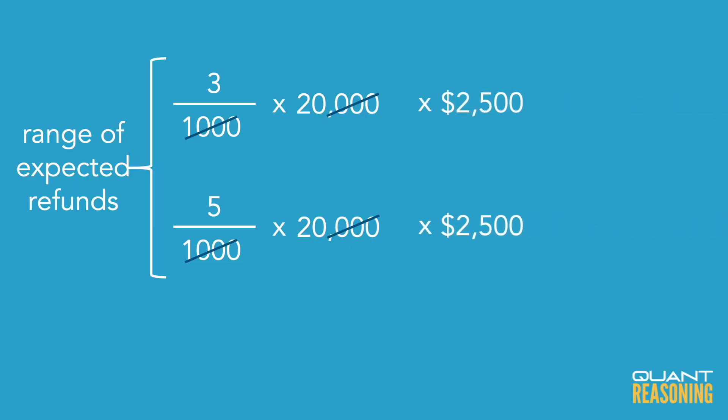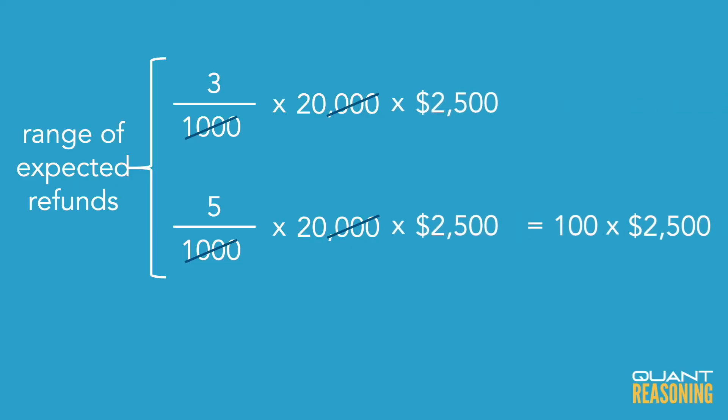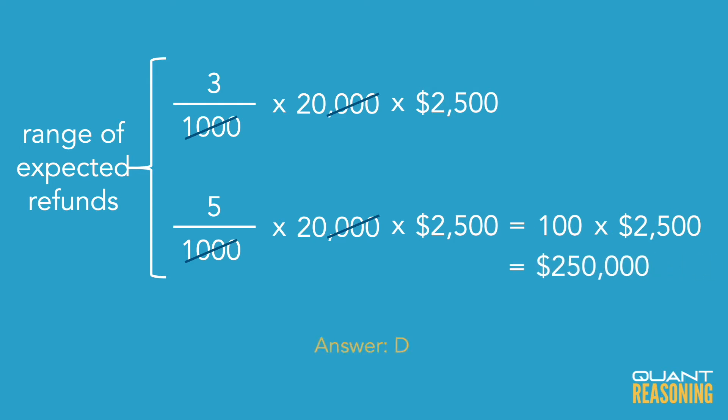We still have to multiply by the dollar amount, which is $2,500. So the top of the range should be 100 multiplied by $2,500, which is $250,000. And that's answer choice D.